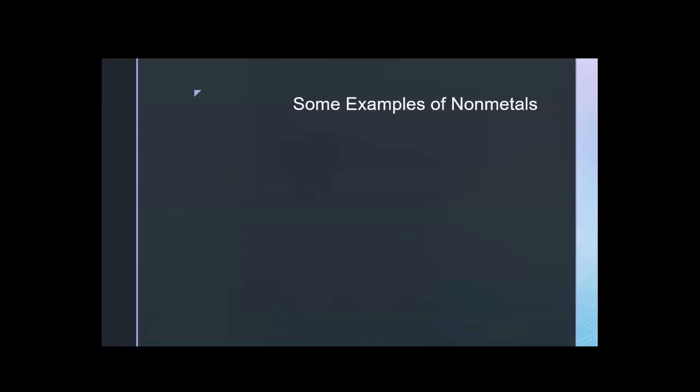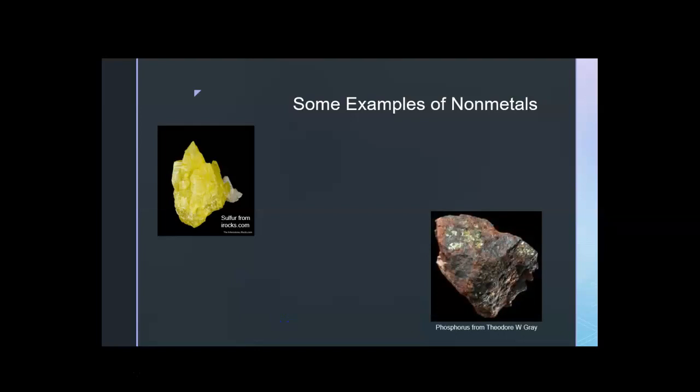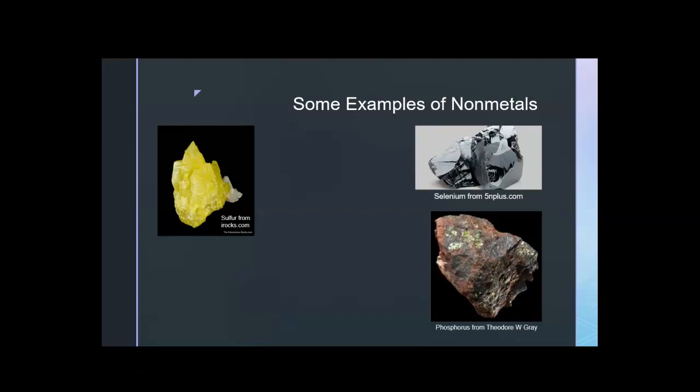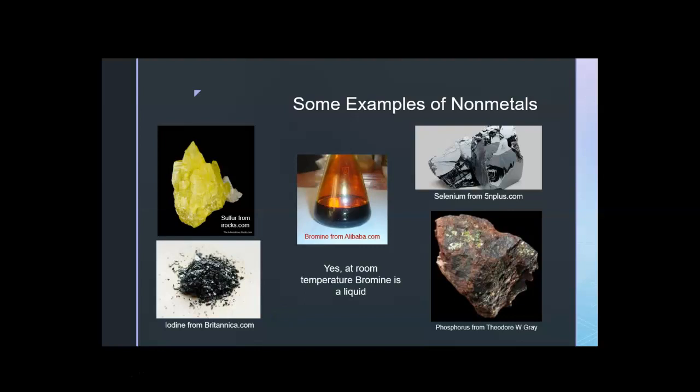Some examples of non-metals, some of which you may know, others maybe not. Sulfur, of course. Most people have seen sulfur. Many non-metals kind of stink. Phosphorus is another non-metal. Selenium is related to sulfur. It kind of looks like it's shiny, but it isn't. Iodine, which has a little bit of a shine when it's in crystalline form, but it doesn't shine in the same way that metals do. And finally, bromine, which also is at room temperature a liquid.